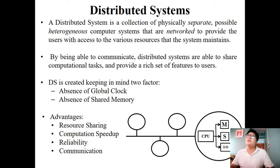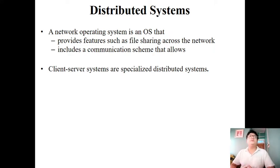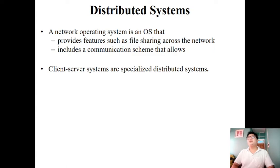To have such a distributed system, we need a special kind of operating system called a network operating system, which provides features like file sharing — how to share files between nodes connected by a network — and communication between those nodes. A client-server system is a special case of a distributed system in which only two systems are connected: one server and one client.